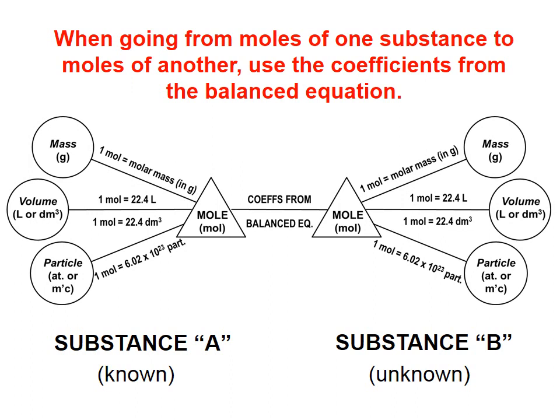Basically, the left and right are mirror images of one another — if you know the left side, you know the right side. On the left we have mass, volume — specifically volume of gases at standard temperature and pressure — and particles, which are chemical particles, typically atoms or molecules. I put them in that order because mass starts with M, volume starts with V, and particle starts with P: M, V, P.